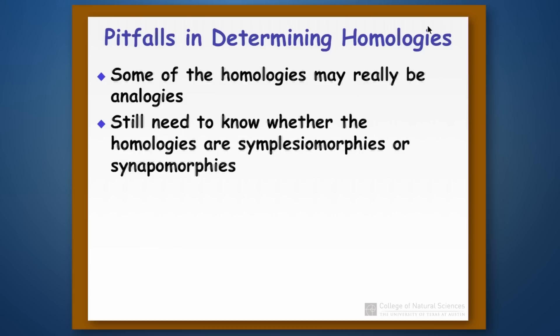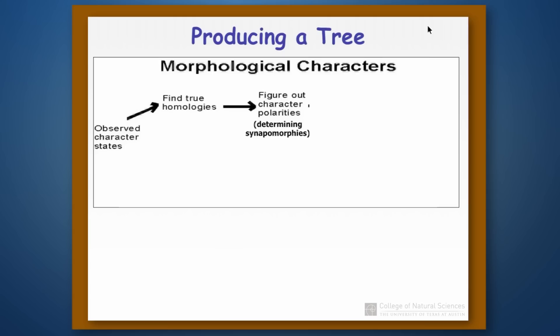Once we have the homologies, that's not enough. Because remember, we don't want to work with all homologies. We want to work with synapomorphies, not plesiomorphies, when we go about using our homologies to reconstruct relationships. So that takes us to our next step: once we have figured out what we think are homologies, then we have to figure out character polarities. Determining character polarities is determining which things are synapomorphies and which things are plesiomorphies.